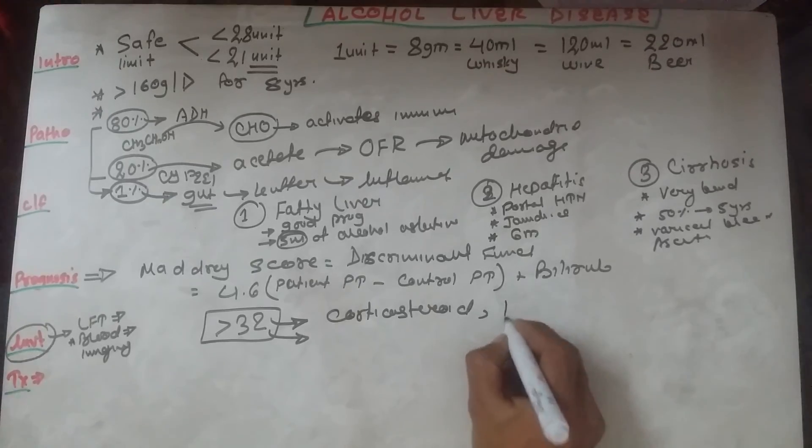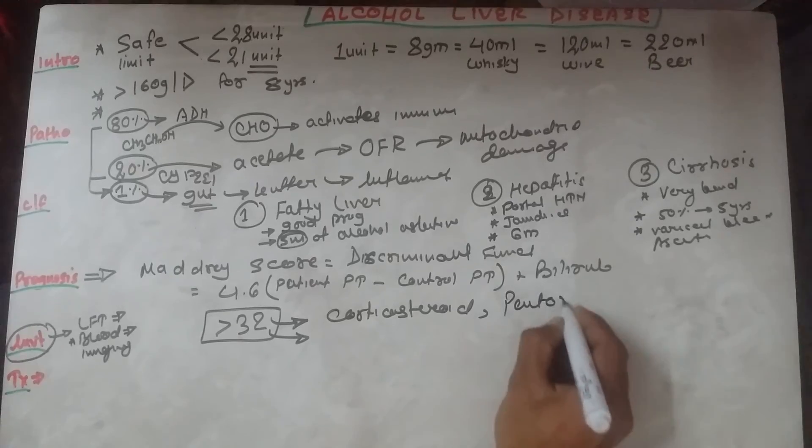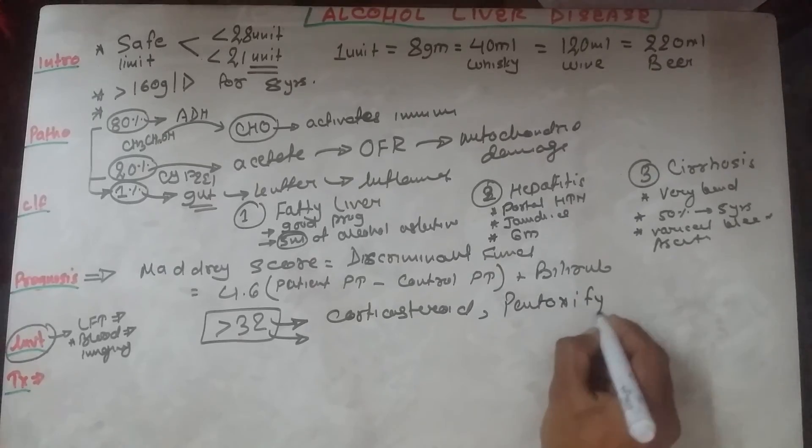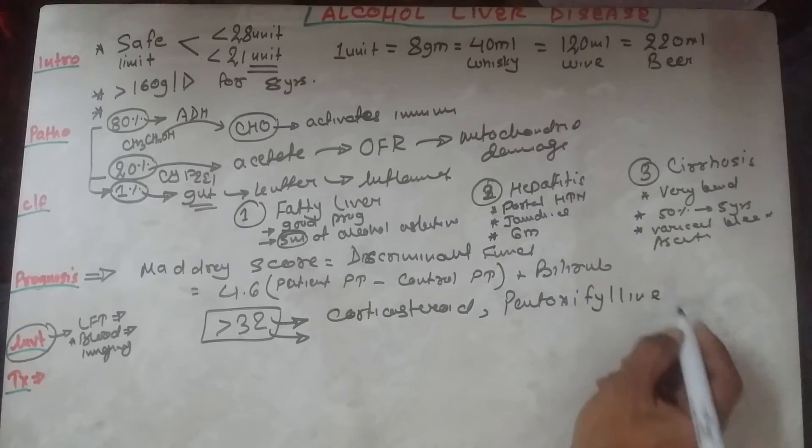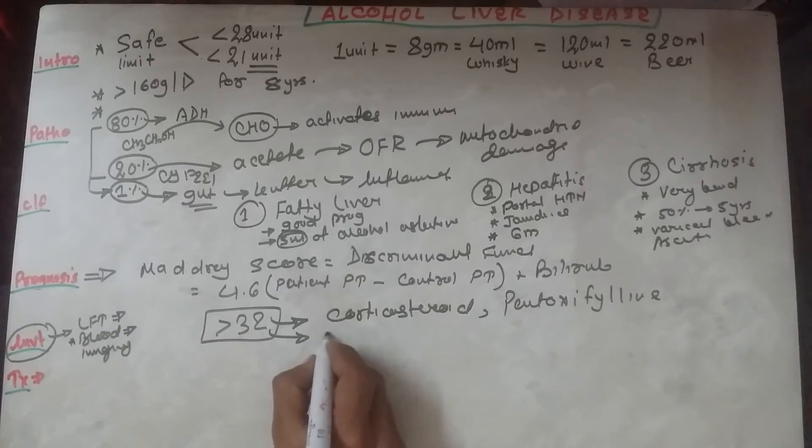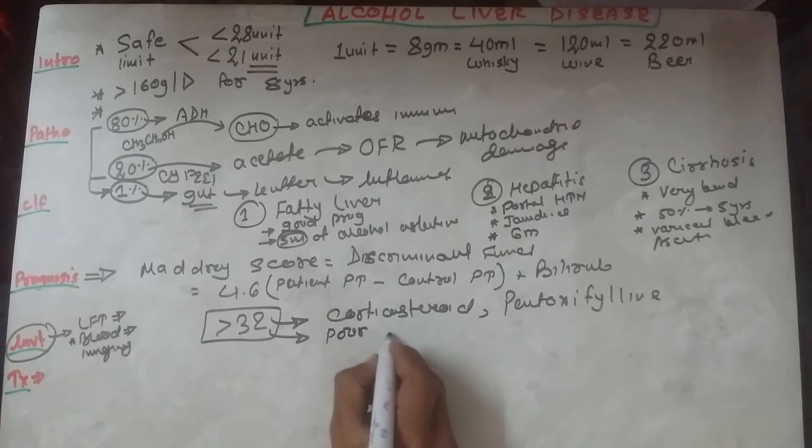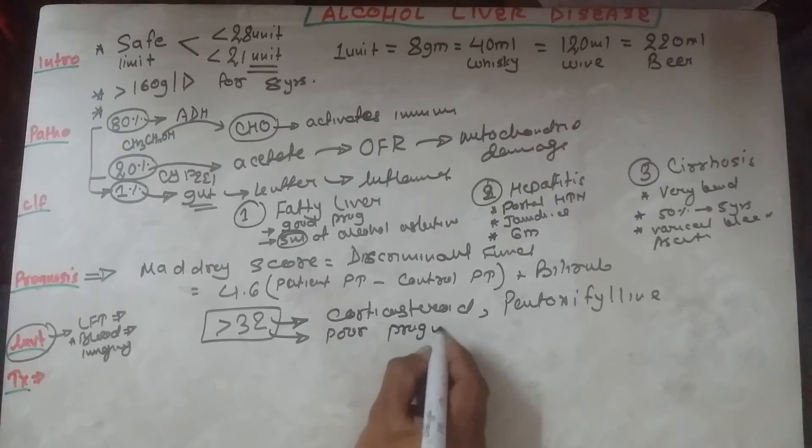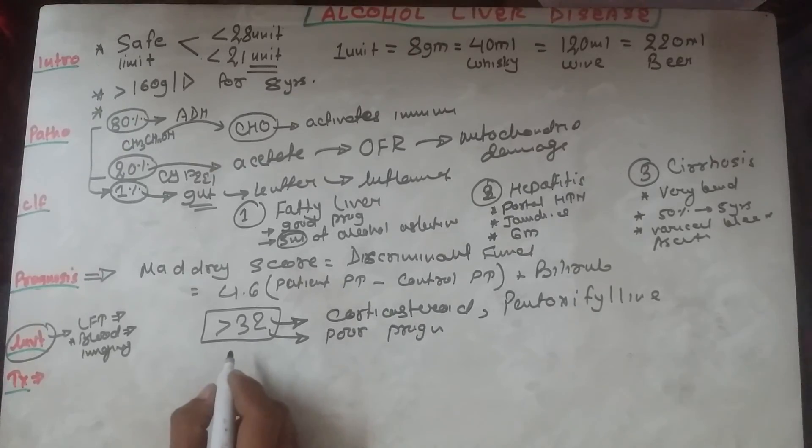This is the significance of Maddrey score. If it is less than 32, we will go for conservative treatment, that is abstinence of alcohol and nutritive support to the patient.